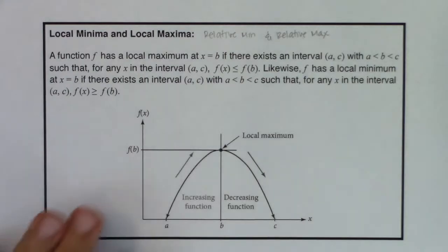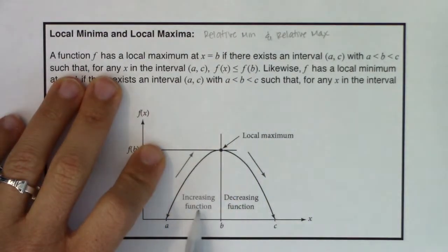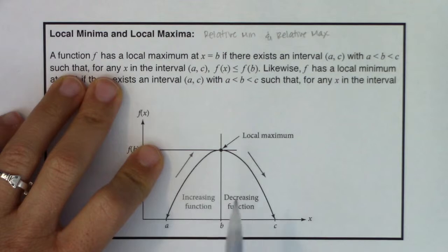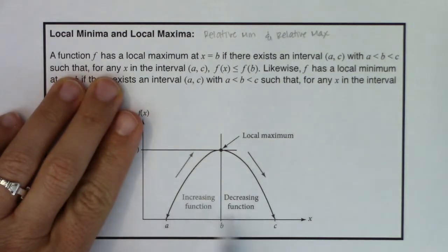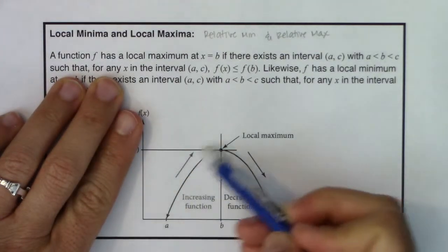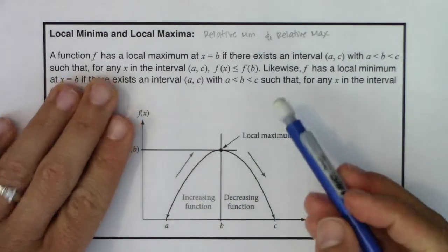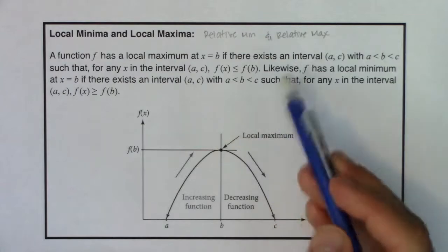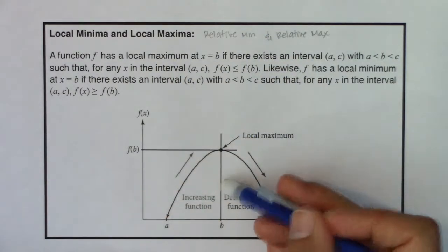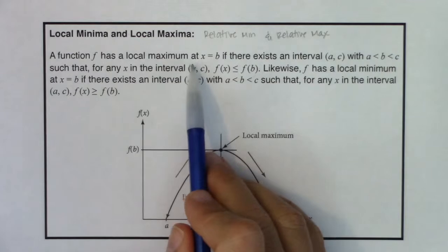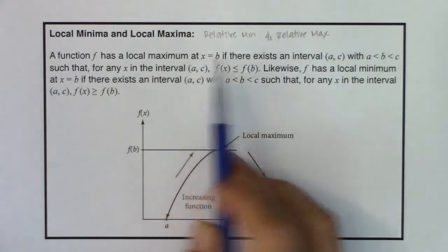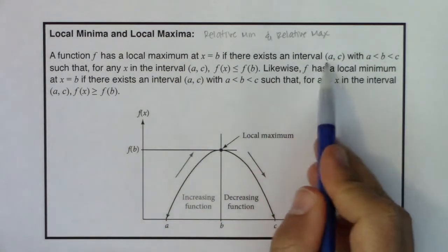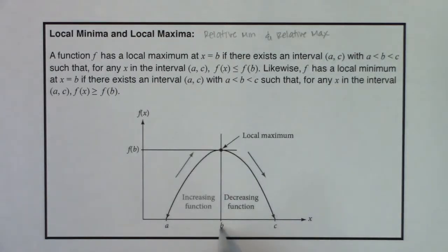I want to look at how this works by referencing the graph. Pretend I have an interval from a to c — you can see my function, it looks like a hill. Visually you can see this is the local max. The definition says you have a local max at x equaling b if there exists an interval from a to c where b is somewhere in the middle — it doesn't have to be exactly in the middle, b just has to be between a and c.